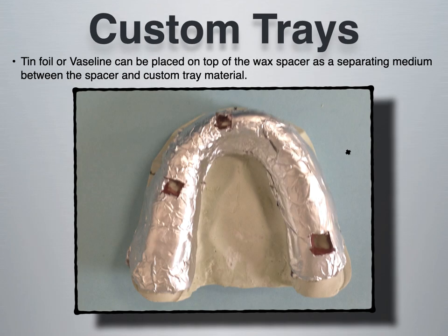Placing a tissue stop directly on the incisive papilla may not be a good idea if it is very soft and mobile. The pressure applied during impression taking could displace the incisive papilla, resulting in discomfort during final denture insertion. A useful tip: using tin foil over your wax — or vaseline as a separating medium on top of the wax spacer — will make it easy to clean the inside of your custom tray after fabrication.